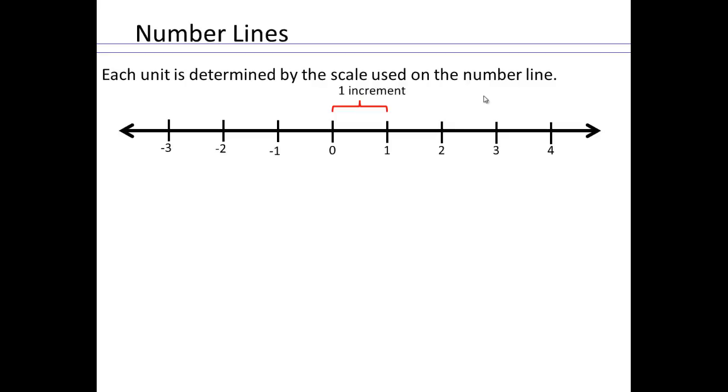Once you place your numbers on a number line, it's also easier to then see the hierarchy of numbers. For example, here negative 3 is smaller than negative 2, negative 2 is smaller than negative 1. So negative 3 is smaller than negative 1. So you can see how ordering of numbers become easy just by looking at number line.